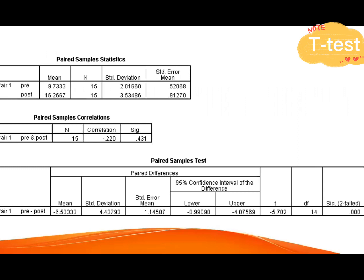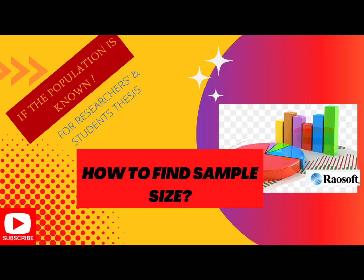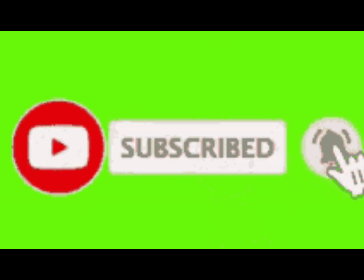This is the actual result using SPSS. We use the standard deviation, the mean, and the standard error, but focus on the t-value of negative 5.702 with a p-value of 0.000. We hope you found this video helpful. If you have any questions, please leave them in the comments below. You can recommend a topic for future discussion. Please watch my other math tutorials and don't forget to subscribe to my channel.